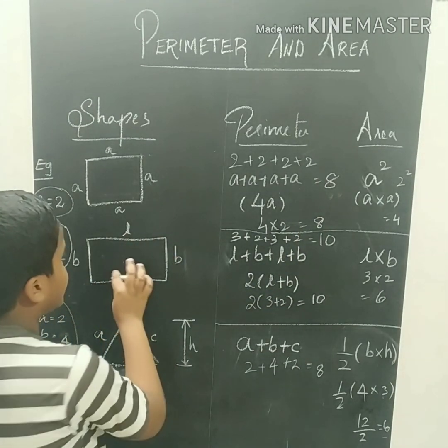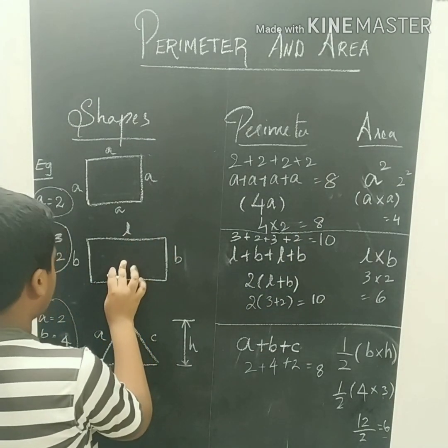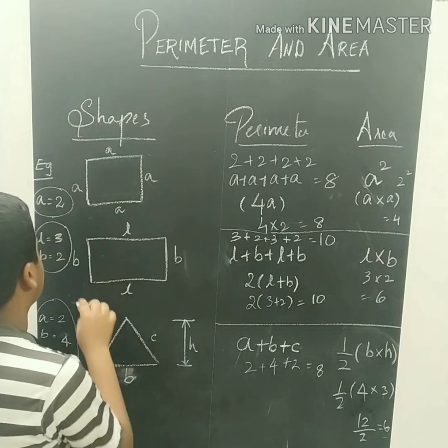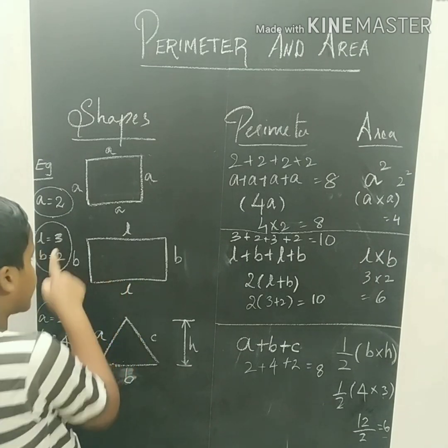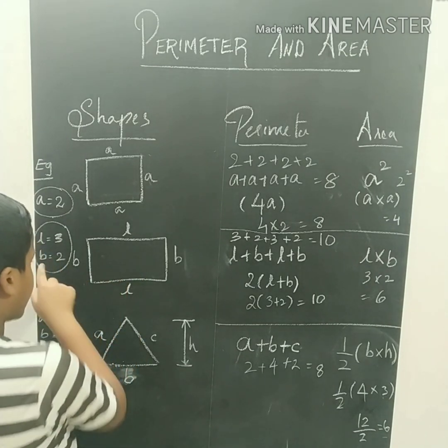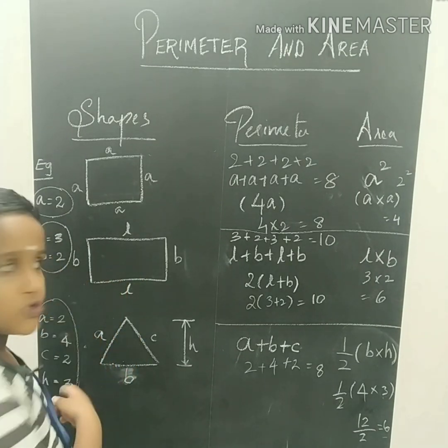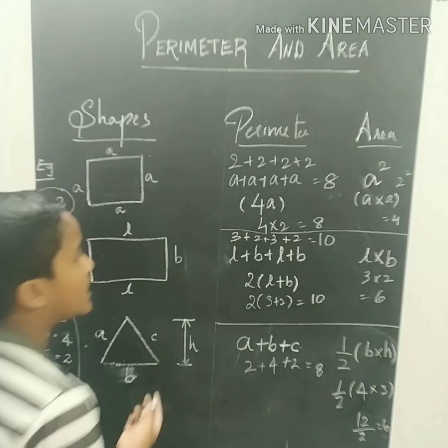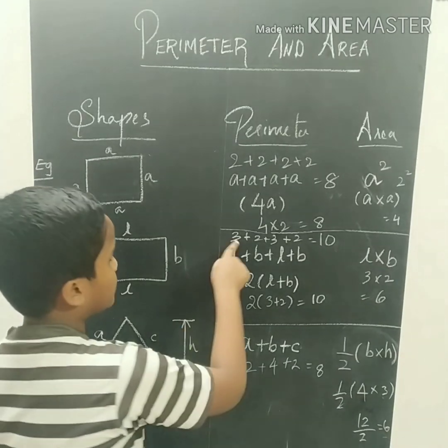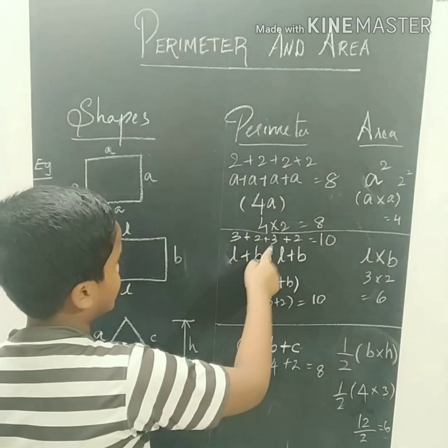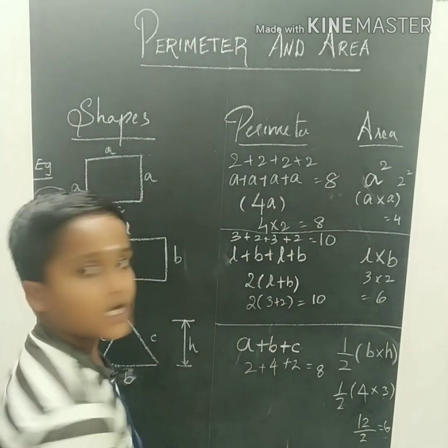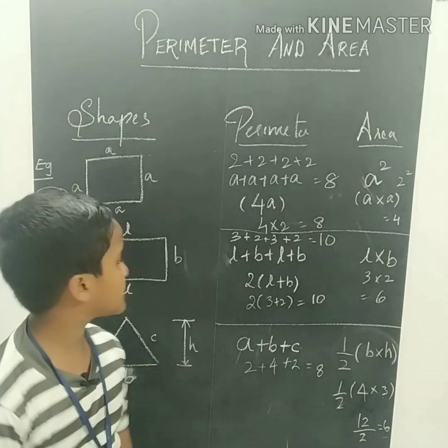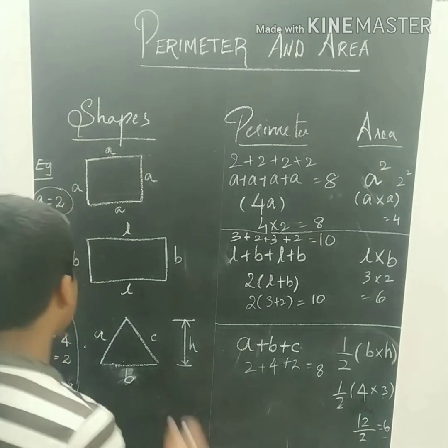Now, if you look at this rectangle, L is equal to 3 and breadth is equal to 2. The perimeter is 3 plus 2 plus 3 plus 2, which equals 10.